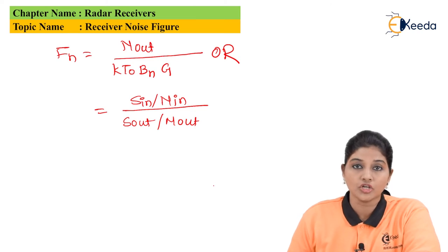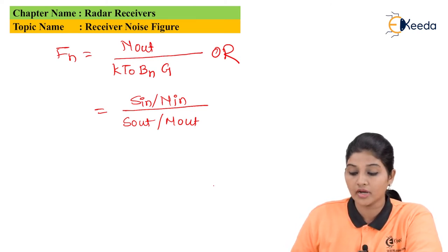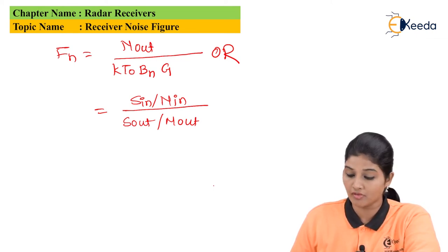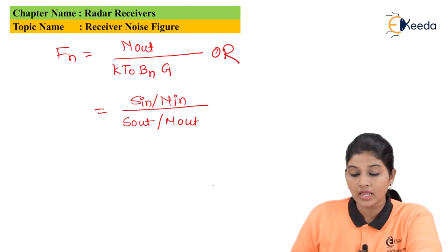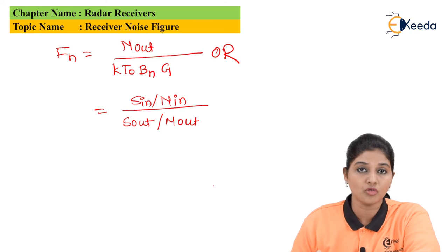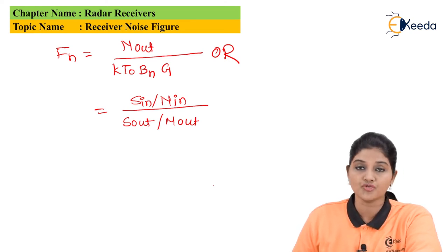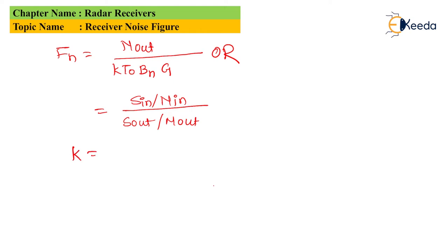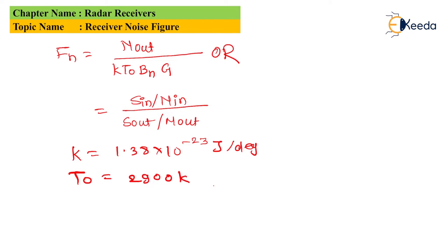The noise figure is given by the formula: FN = N_out / (KT₀BNG), or equivalently FN = (S_in / N_in) / (S_out / N_out), where N_out is the available output noise power. K is Boltzmann's constant with a value of 1.38 × 10⁻²³ joules per degree. T₀ is the absolute standard temperature equal to 290 Kelvin. BN is the bandwidth and G is the gain of the system.